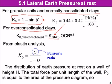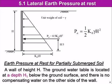From elastic analysis, K0 can be found from the Poisson ratio divided by 1 minus the Poisson ratio. The distribution of stress or earth pressure on the wall will be a triangular shape.